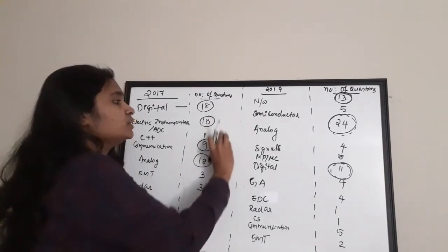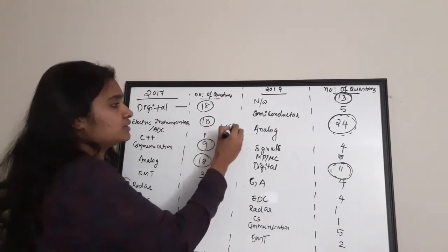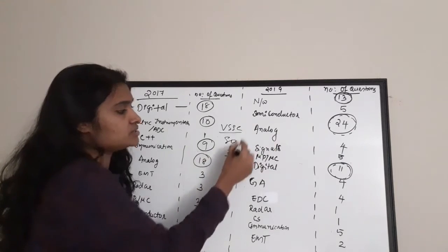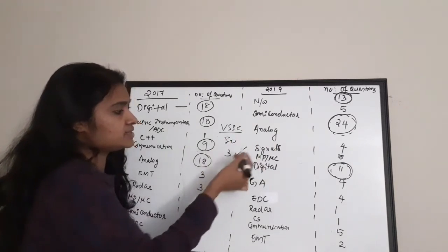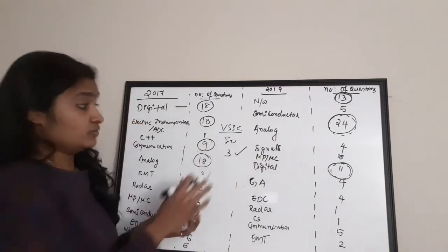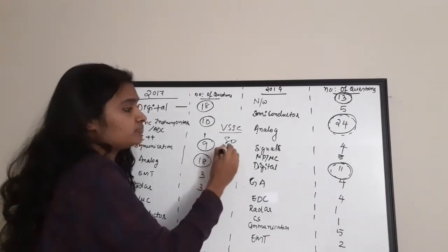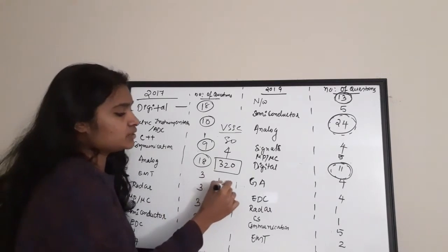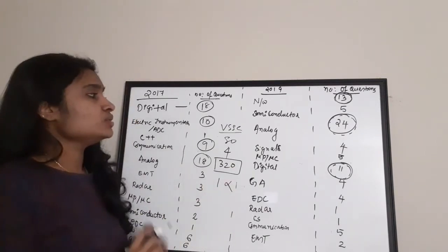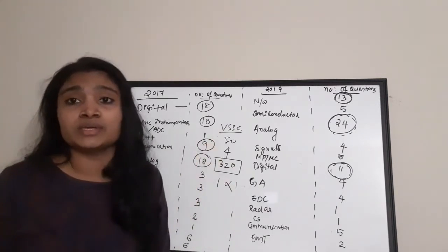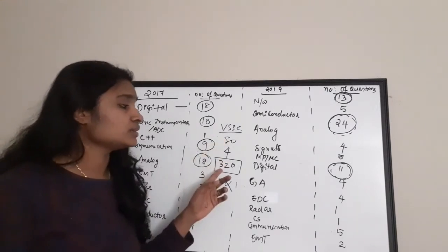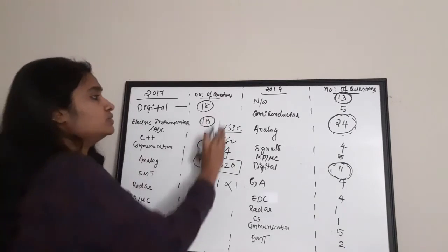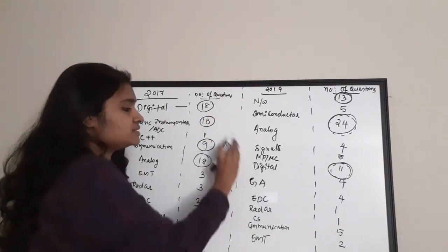For the VSSC location, there are 80 questions with 4 marks for each correct answer, making a total of 320 marks, and -1 mark is deducted for each wrong answer. So the VSSC exam totals 320 marks with 80 questions.